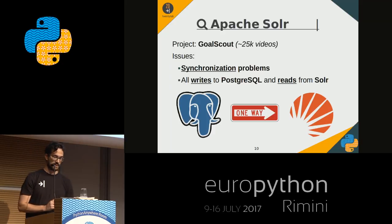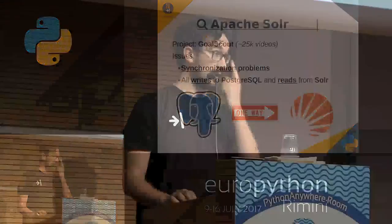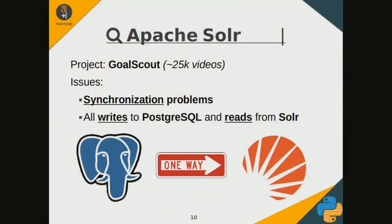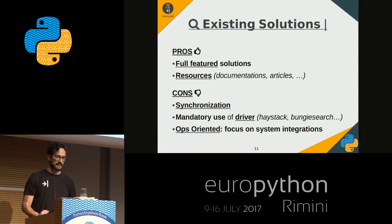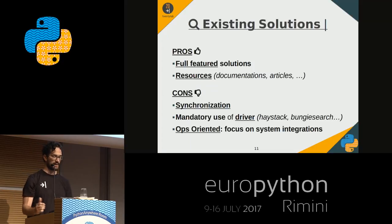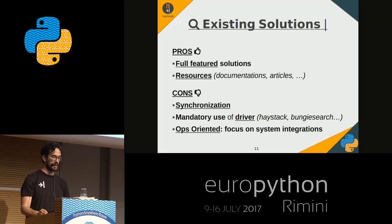Another project was goldscout.com, a website dedicated to showing sports videos uploaded by public users, with about 25,000 videos. The use of Solr for full-text search in this project was a customer choice. We always had some problems synchronizing the data, and at the end we preferred writing to Postgres and reading from Apache Solr. These solutions I've spoken about are full-featured and advanced with many online resources, documentation, articles, and FAQs, but I found synchronization problems and always had to use a driver to connect with them.